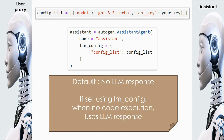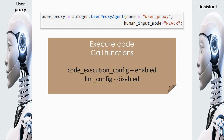If the LLM response is to be used when there is no code execution, it is compulsory that we give llm_config a dictionary with a config list, where the config list specifies the model we want to use along with the API key. We also need to create the instance for UserProxyAgent, giving it the name 'user_proxy'. If human_input_mode is given as 'never', it assumes the agent is always expected to find its own reply and reply to the assistant.